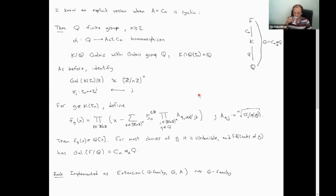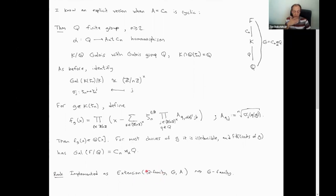So this is how it works. It's very explicit because you can do these computations very easily over the complex numbers, round to the nearest integers and all that. This has also been implemented in the package as a function called 'extension,' which takes a family with Galois group Q, the group G, and a normal cyclic subgroup of order N, and lifts this family to a G family.